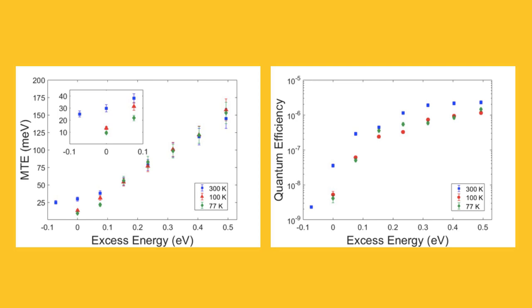Looking at the MTE plot, and in particular the small inset graph, we see that we were indeed able to measure very low MTEs. The blue data point, which represents the room temperature measurement, shows a smallest MTE of 25 millielectron volts at negative 0.1 electron volts of excess energy. This is the thermal limit at room temperature and therefore the best possible MTE we could achieve. You will notice that at negative 0.1 excess energy, we don't have any data points for the red and green cryogenic measurements. At these low temperatures, there wasn't enough signal with respect to the noise to perform an accurate measurement.